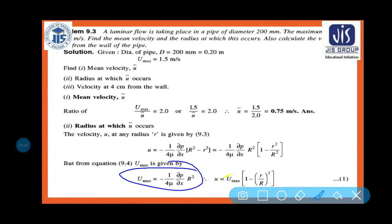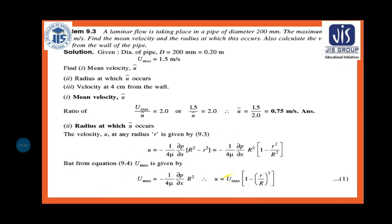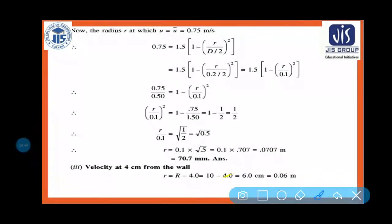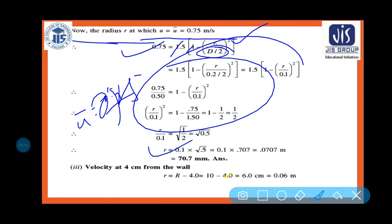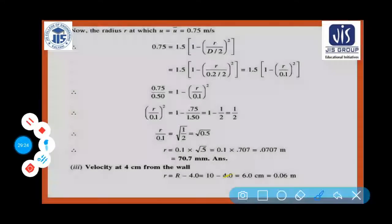Substituting: 0.75 = 1.5 · (1 - r²/R²), where R = 0.1 m. Solving for r gives r = 70.7 mm. This is the radius at which the mean velocity occurs.